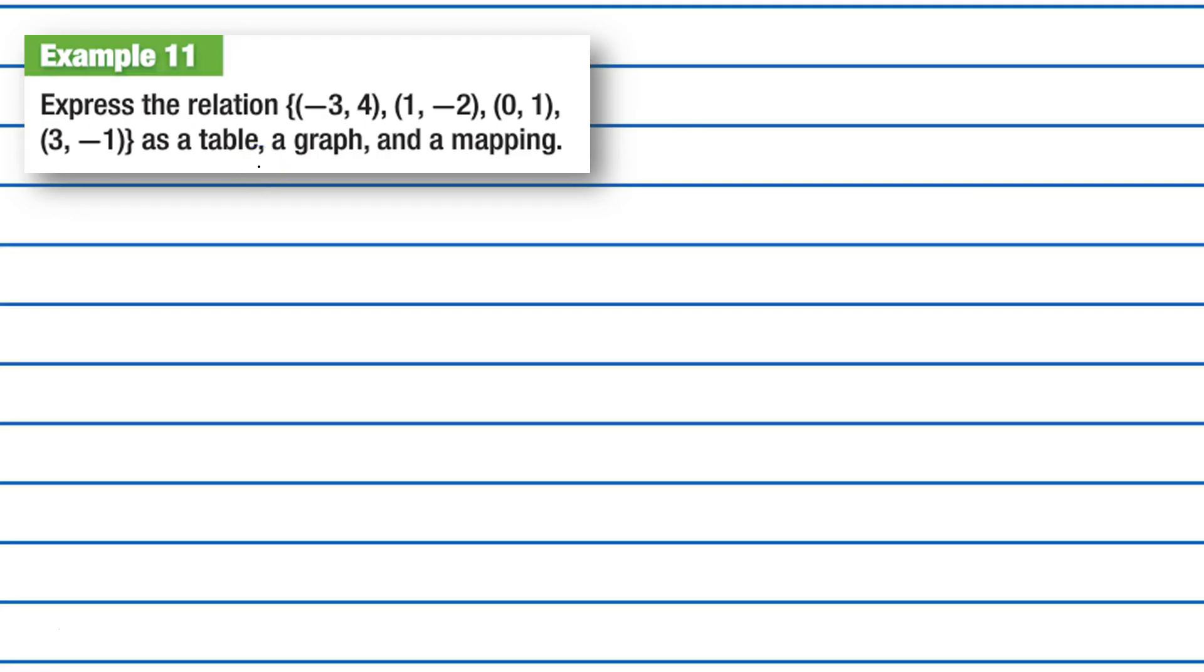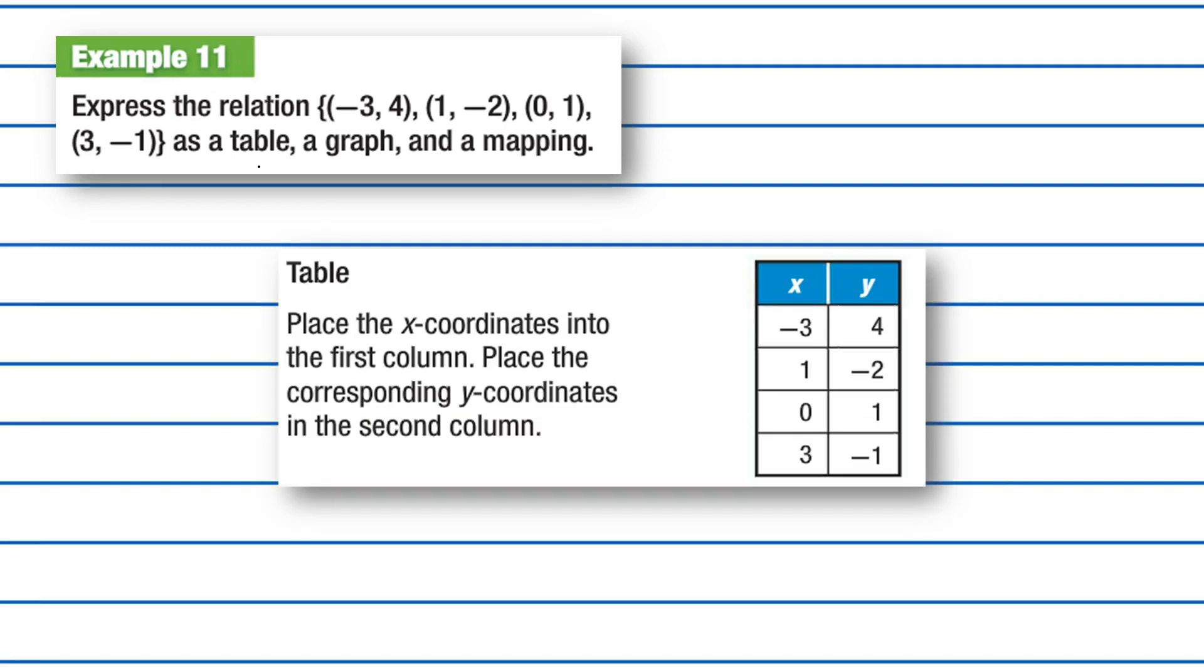Let's go over example 11. Express the relation negative 3, 4, 1, negative 2, 0, 1, 3, negative 1, as a table, a graph, and a mapping. So, first of all, let's go over the table. Remember, each of these can be put as x, y. So x, y, I'm putting it right above. And I'm going to put this one below. And for each one, they go together. I'm going to put this on the side, just so you can see how it is the exact same thing. x is negative 3, y is 4. This is just shown as a table. 1, negative 2, 0, 1, and 3, negative 1. We've shown it as a table.